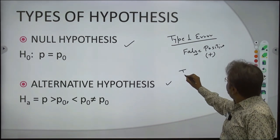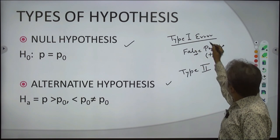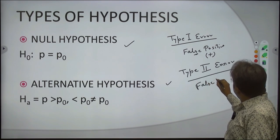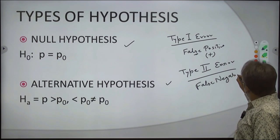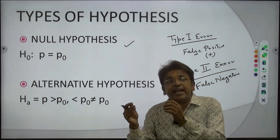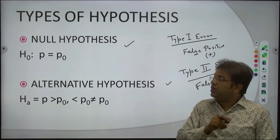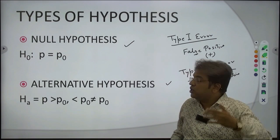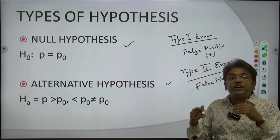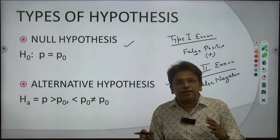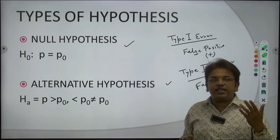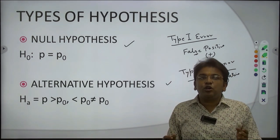The second is Type 2 error, also known as false negative. Here, the null hypothesis is rejected but it should actually have been accepted. Due to sampling error, we accept the alternative hypothesis when in fact our null hypothesis was right. These are the two types of errors a researcher faces, and sampling error must be considered to rectify them.